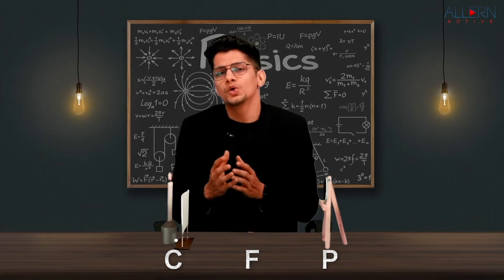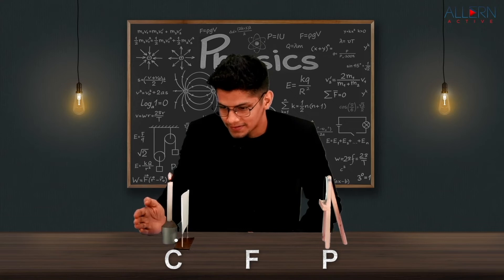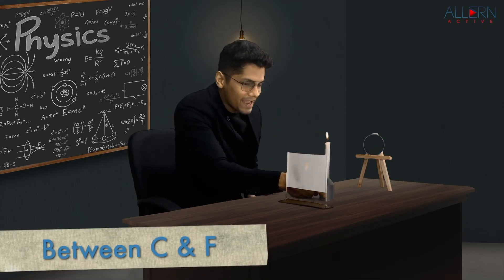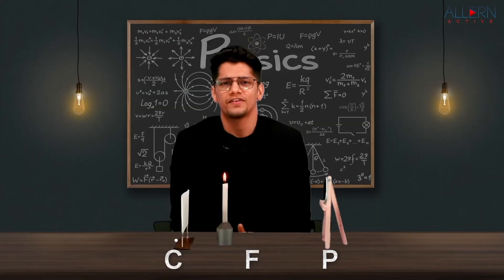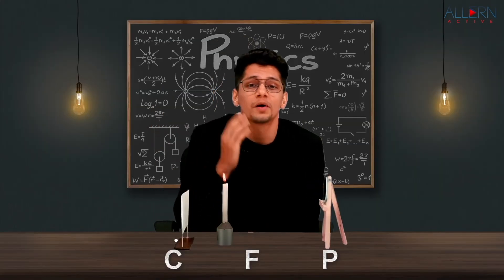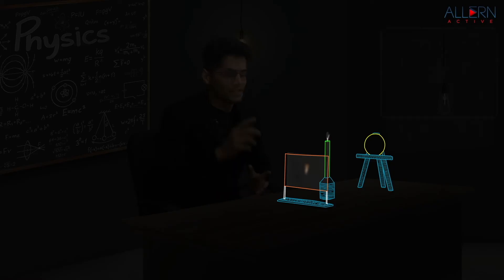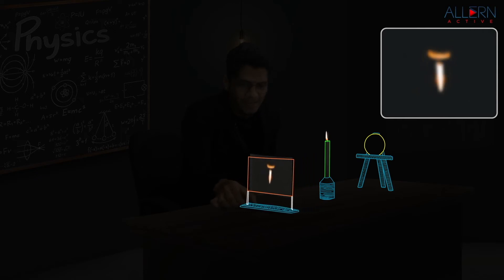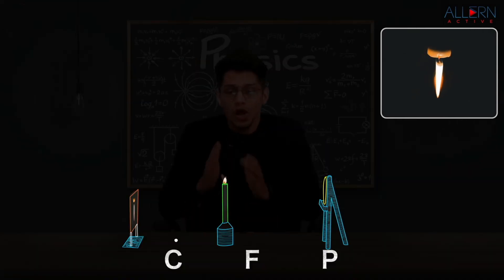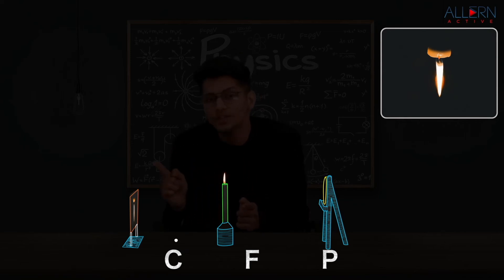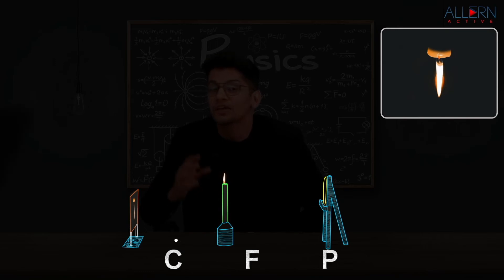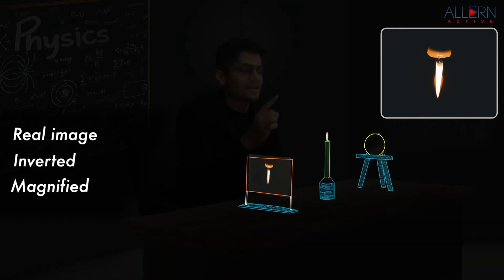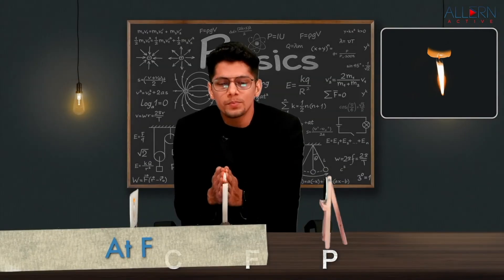Now we move the candle so the object is between C and F. Since we moved the object towards the mirror, we move the screen away. The image now is bigger — when the object is between C and F, the image is obtained beyond the center of curvature. The nature is real, inverted, and this time magnified — greater in size than the actual flame.